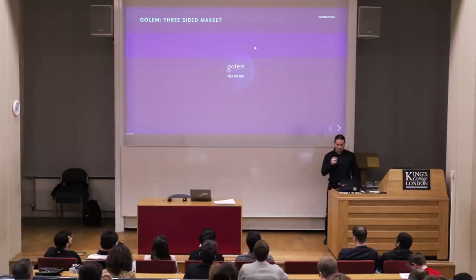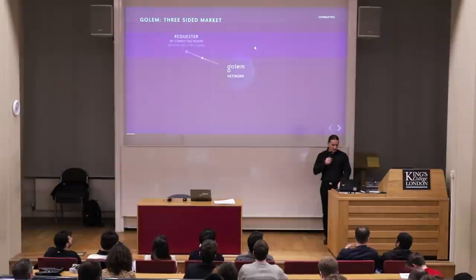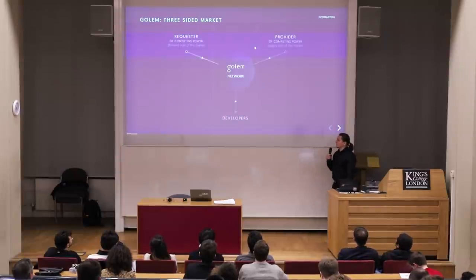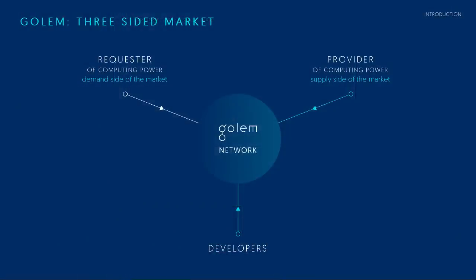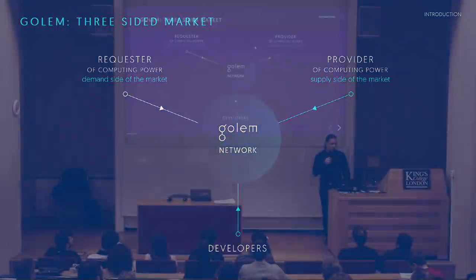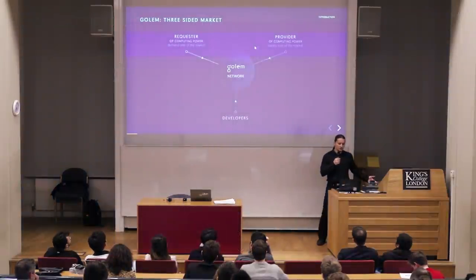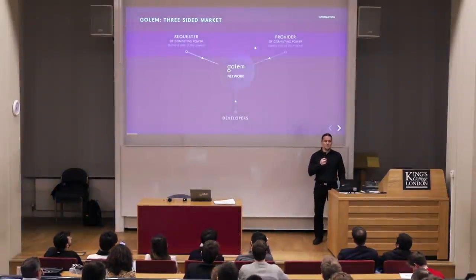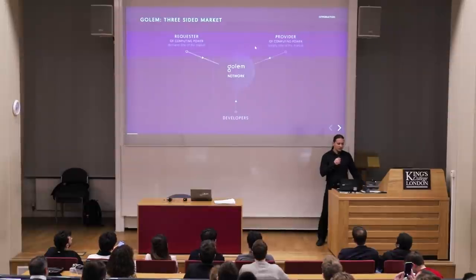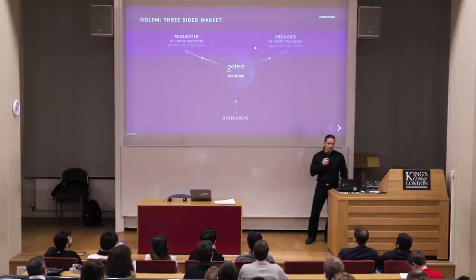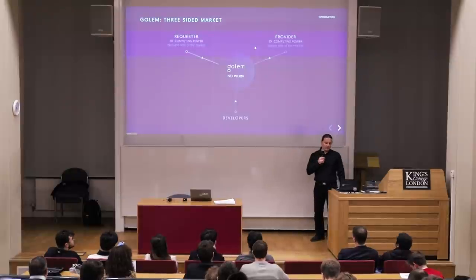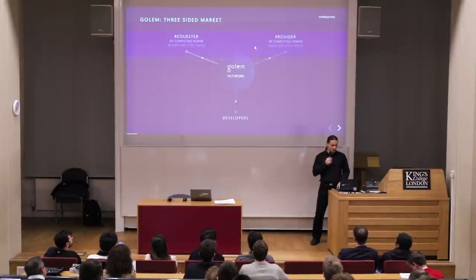Three sides to Golem as we see them now are requesters, providers, and developers. Developers are software developers who provide computational environments for Golem that can be distributed across the network. Requesters request computations that can be sent to the network. Providers are users who can give out a bit of their power to the network and hopefully make some money by renting their spare CPU cycles.